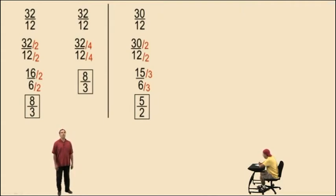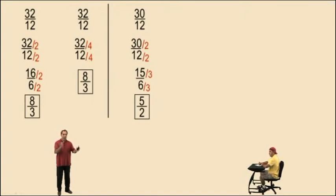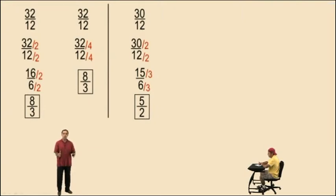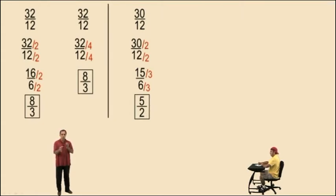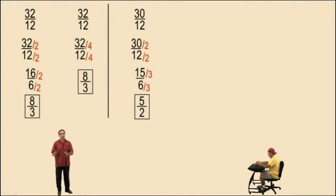There's something called divisibility rules — hopefully your teacher has talked about them. How do you know if a number is divisible by 3? Take any number, add up the digits, and if that sum is divisible by 3, it means the number is divisible by 3. Like 15 — it's a 1 and a 5. 1 plus 5 is 6, and 6 is divisible by 3, which means 15 is divisible by 3. Keep that in mind.